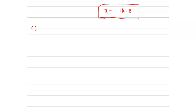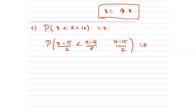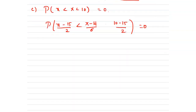For the third part, we have to find x such that p of x less than X less than 10 equals 0. So from this we have to find x. This implies p of (x minus 15) divided by 2 less than (X minus mu) divided by sigma less than (10 minus 15) divided by 2, where the right-hand z value is negative 2.5, equals 0.